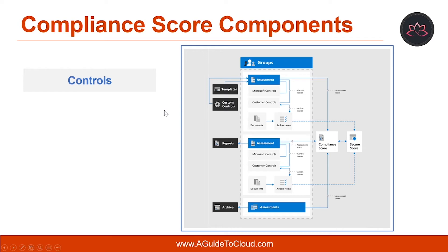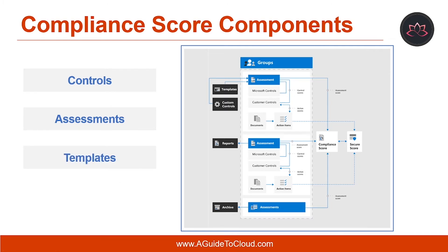The next component is assessments. An assessment is an evaluation of a template that initiates the scoring process for your organization. Another component is templates. Compliance score provides pre-configured templates for assessments, and also allows you to create templates for your own assessments to suit your needs. The next component is groups. Groups allow you to organize assessments in a way that is logical to you.